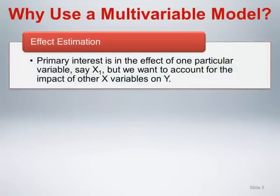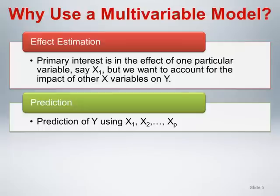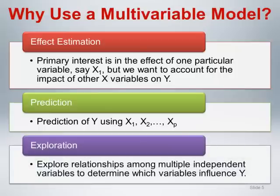Regardless of class of model, there are three general motivations for using a multivariable model. The first is for effect estimation. Here the primary interest is in the effect of one particular variable, say x1, but we want to account for the impact of other x variables on y. A second goal is prediction of y from a group of independent variables. Here the primary goal is usually to develop some kind of prognostic model for use in clinical care. A third goal is exploration. Here the goal is to simply explore relationships among multiple independent variables to determine which variables influence y. This is usually the goal when the area under study is not well understood, and investigators are trying to understand interrelationships between the various independent variables and the response.